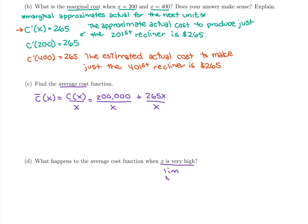We want to take the limit as x goes to infinity. When x, when the production is very high, what is happening to the cost on average. So we're going to take the limit as x goes to infinity, we want to produce more and more recliners, what's happening to our average cost.